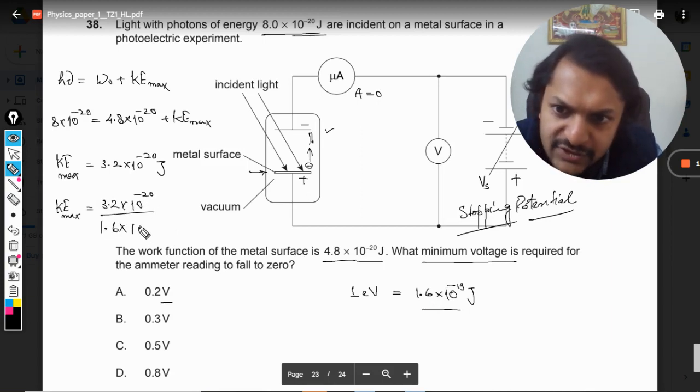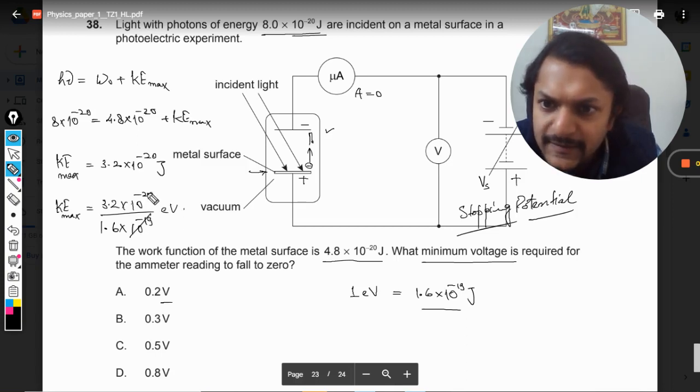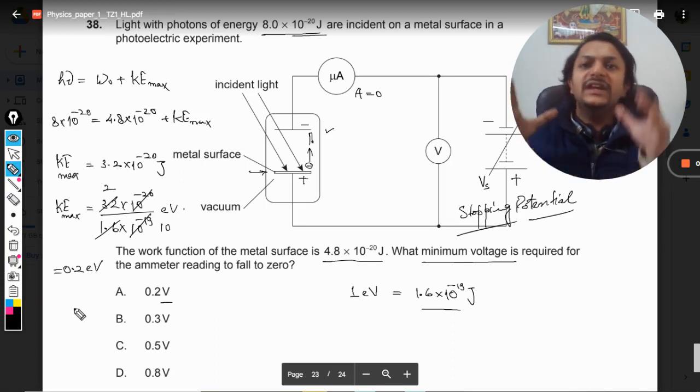So this gets canceled and it will be divided by 10 now, and this will be divided by 2. So our energy is this—so this much is the energy that we need to supply to stop the movement of the electrons.